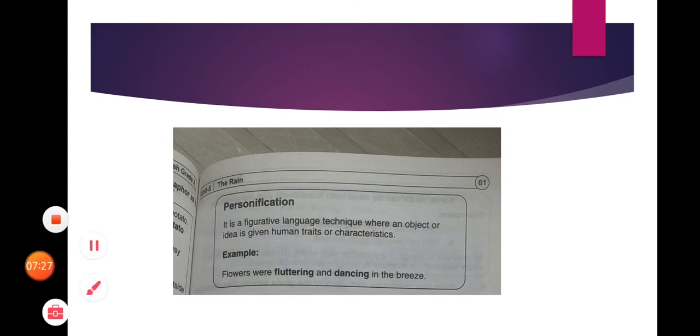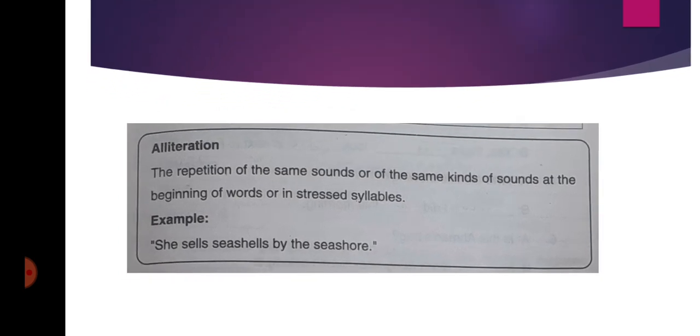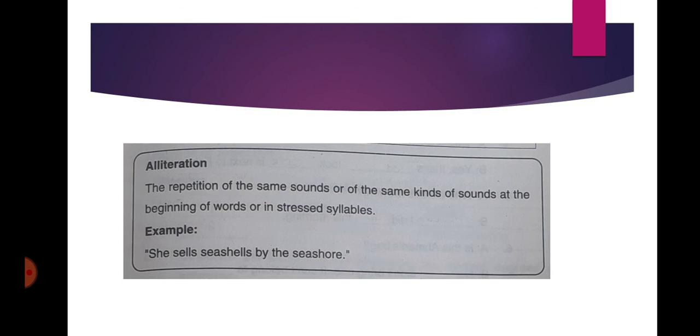Then we have alliteration, the repetition of the same sound or of the same kind of sound at the beginning of words or in stressed syllables یعنی کسی بھی sentence کے سٹارٹ میں word کے سٹارٹ میں یا جو stressed syllables ہیں کہ وہ syllables جن پہ دباؤ ڈال کے ہم ان کو پڑھتے ہیں اس کو کہا جاتا ہے alliteration یعنی the repetition of same sound. For example, she sells seashells by the seashore. Now we have the repetition of she and S so it is called alliteration.